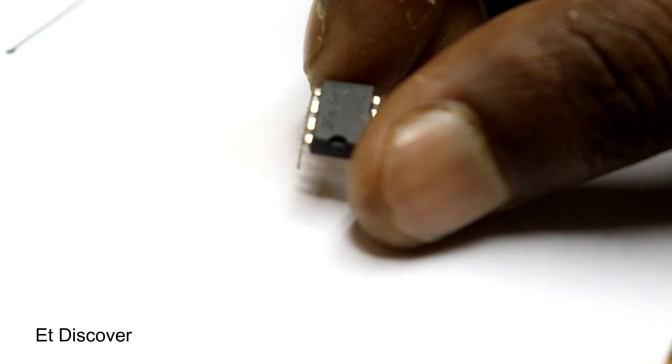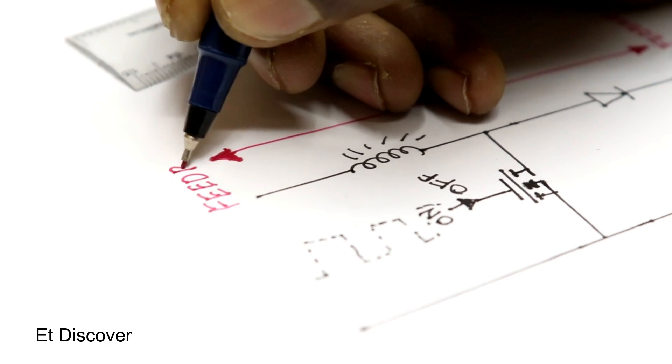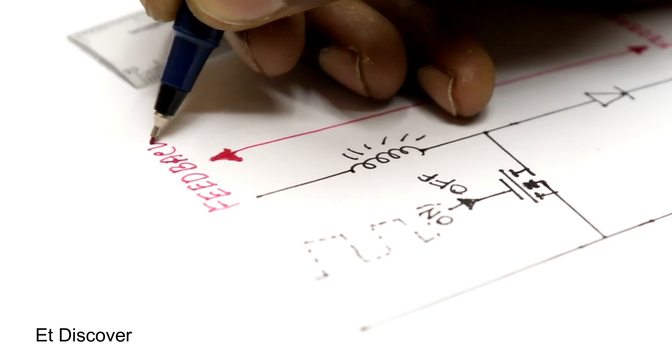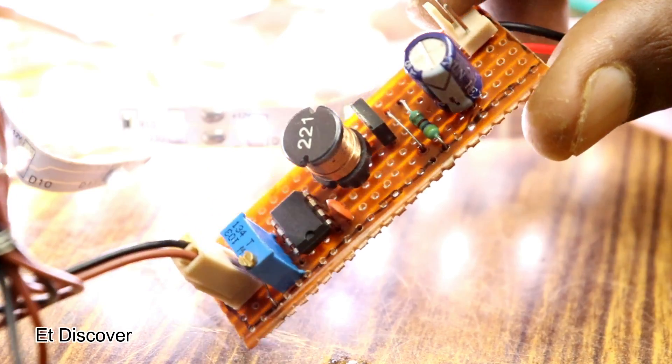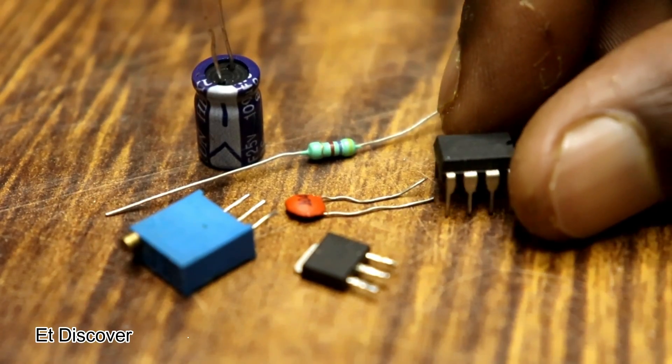So, 555 timer IC is not built for boosting voltage. There is no chance of feedback. So this can help to build a normal boost converter. Let's make the circuit. You need these components to build a boost converter.